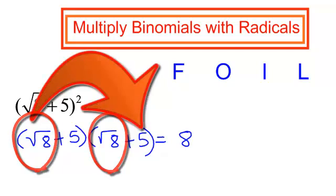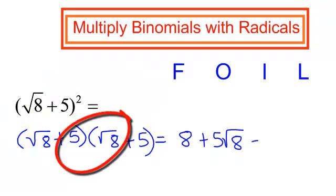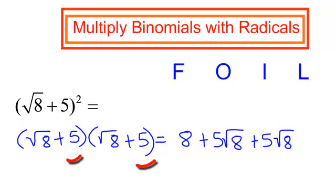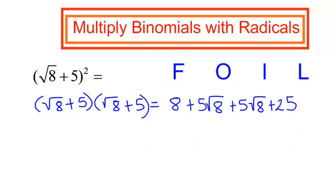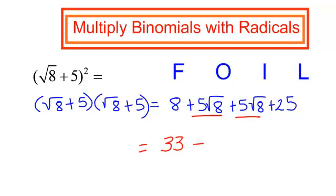Outer terms: 5 times radical 8 is 5 radical 8. The inner term — if you remember our special products, you know that the inner and the outer are always the same thing — it will also be 5 radical 8. And the last term: 5 times 5 is 25. I can do more — I have some like terms. 8 plus 25 will be 33, and positive 5 radical 8 plus another positive 5 radical 8 will be positive 10 radical 8.